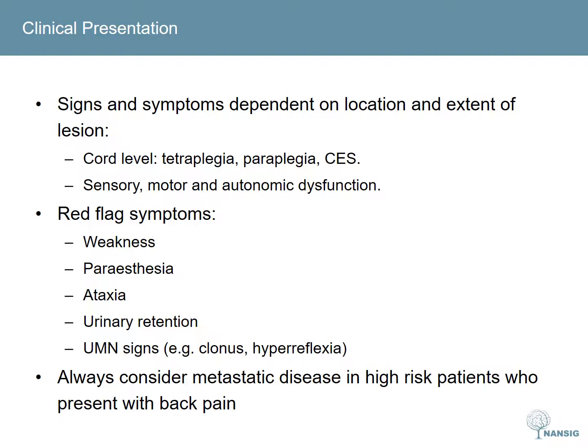Red flag symptoms that warrant urgent investigation are any weakness or paraesthesia, as previously mentioned, ataxia, urinary retention, and upper motor neurone signs. Always consider metastatic disease in any patients who are high risk that present with back pain. A handy way to remember which tumours commonly metastasise to bone is by thinking of the five B's: breast, bronchus, thyroid, kidney, and prostate.